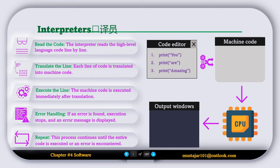Let's see an example of how the interpreter translates high level language code to machine code. The interpreter reads the first line and translates it to machine code, passes the machine code to the CPU, and the CPU shows you the output.